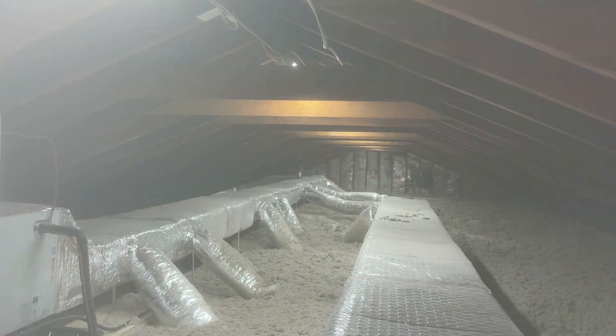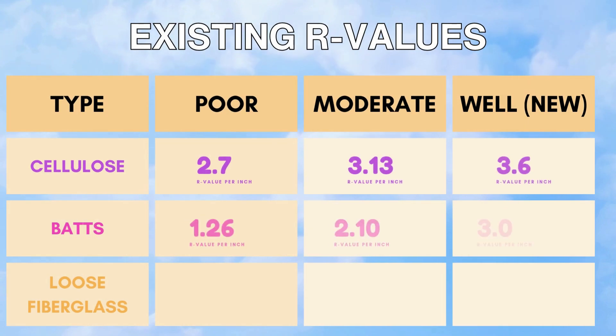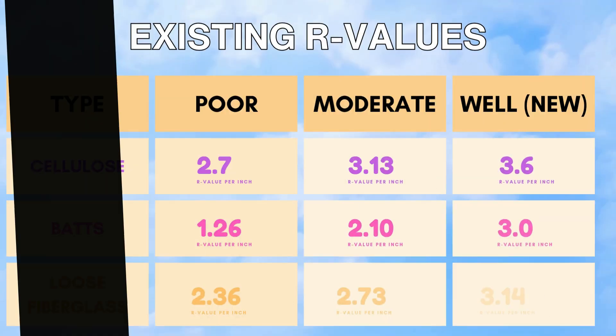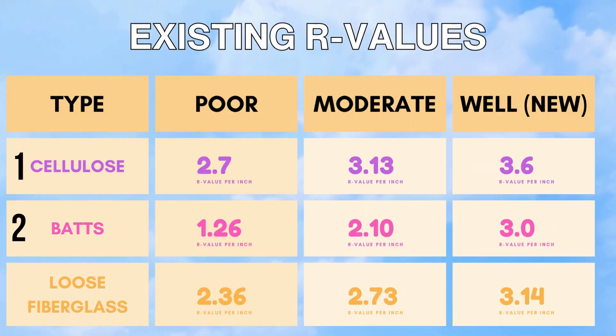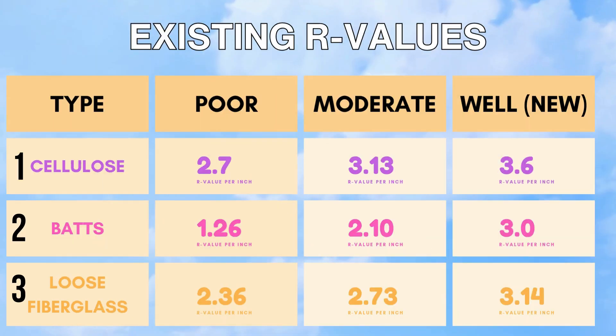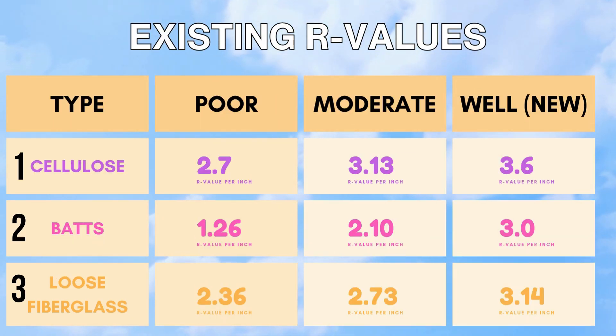These are the three main types of insulation you will find in residential attics. Once you have figured out the overall condition of your insulation, you can use this to assign an R-value based on your type.